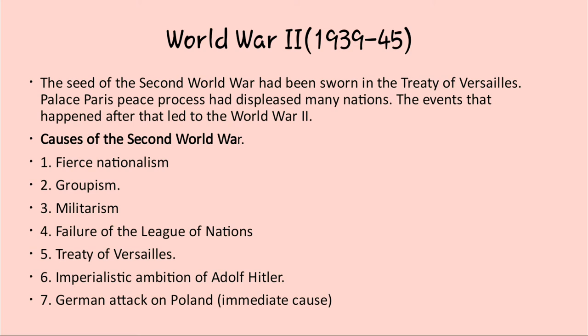The fourth cause is the Failure of the League of Nations. After the First World War, the League of Nations was not able to solve problems. Italy had captured Abyssinia, Japan attacked Manchuria, and Germany snatched away the provinces of Czechoslovakia. In such situations, the League of Nations could do nothing. The greed for power among several nations became stronger. It could not stop groupism, and this was the biggest failure of the League of Nations.